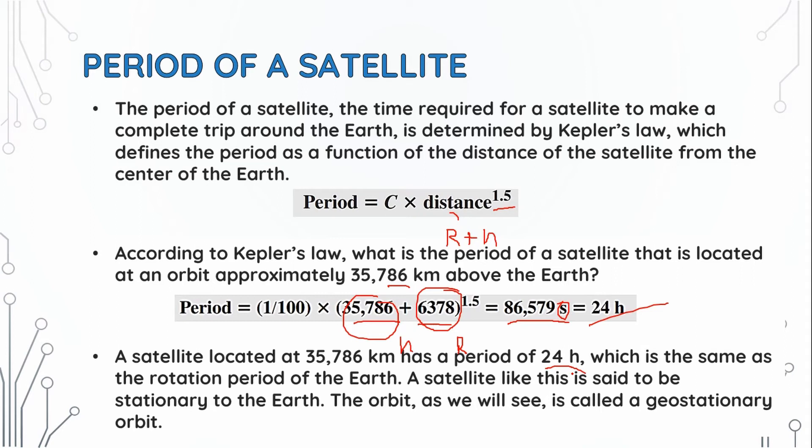The period of a satellite, the time required for a satellite to make a complete trip around the Earth, is determined by Kepler's law. A satellite with the same period as Earth is said to be stationary to the Earth. The orbit is called a geostationary orbit.